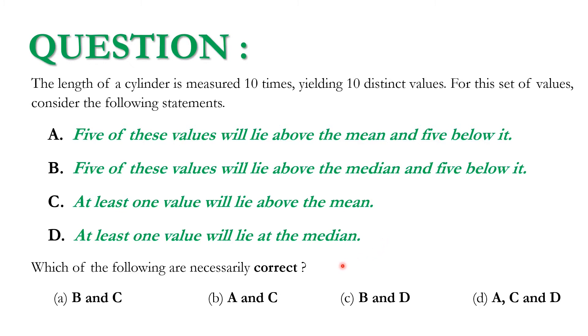Which of the following are necessarily correct? Option A: B and C. Option B: A and C. Option C: B and D. Option D: A, C, and D.